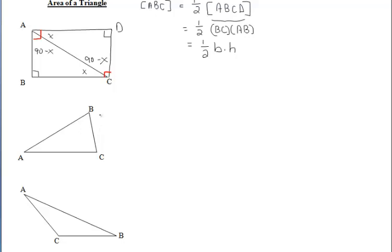Now that we know how to find the area of a right triangle, it will help us find the areas of our acute and obtuse triangles. We want to try to create right triangles whenever possible. We want to find the area of triangle ABC. That triangle is made up of two right triangles: the yellow one, triangle ADB, and the blue one, triangle CDB.